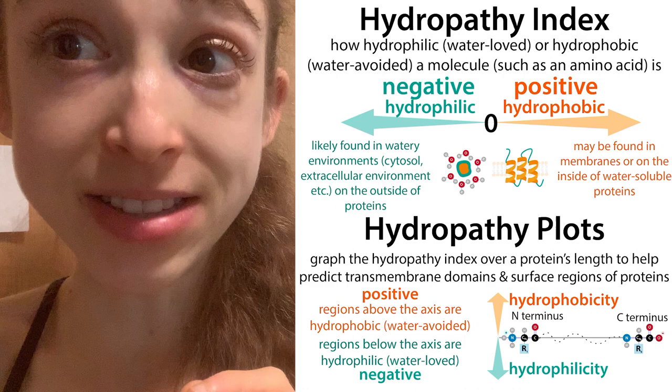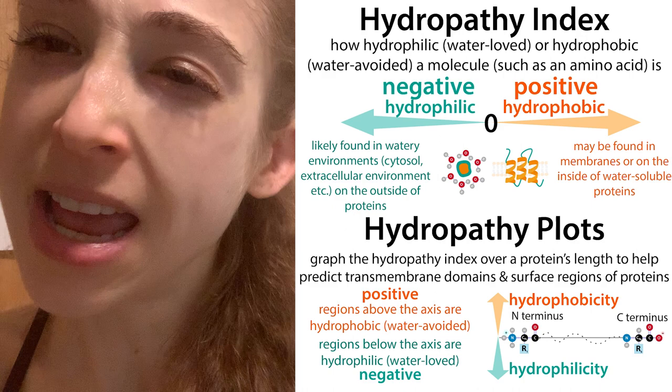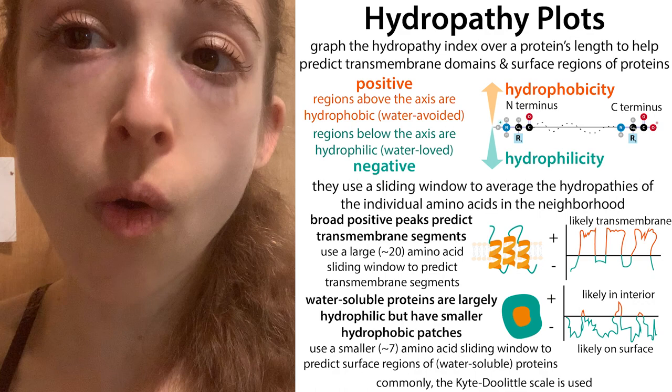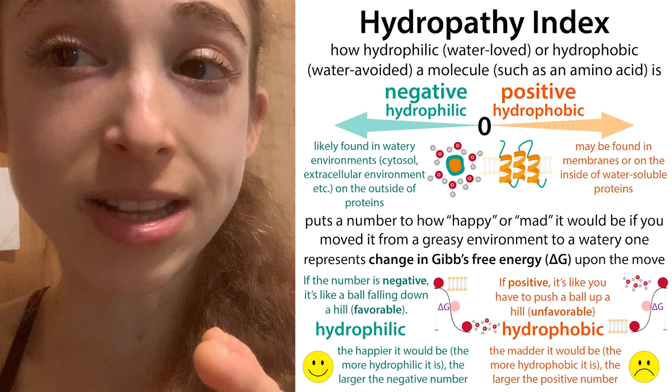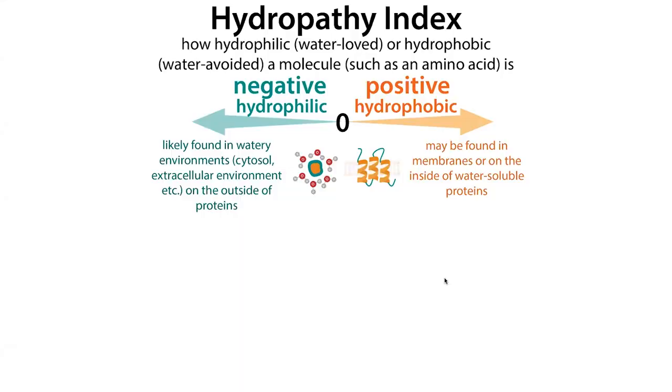The hydropathy index looks at individual amino acids and tells you how likely that amino acid is to be found near water versus away from water. The hydropathy plot takes those individual hydropathy indices, takes a sliding average and plots them along the length of a protein. This allows you to identify regions that are probably transmembrane regions, or for water-soluble proteins, regions that are probably on the outside versus the inside. It can get confusing because a positive value is hydrophobic and a negative value is hydrophilic. Let's go look.